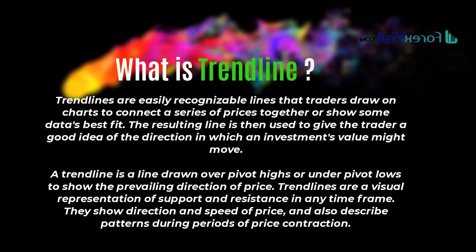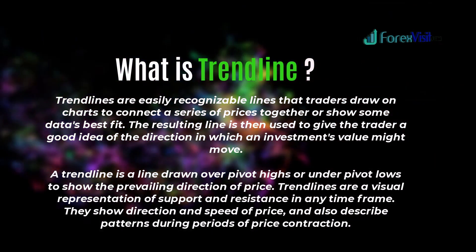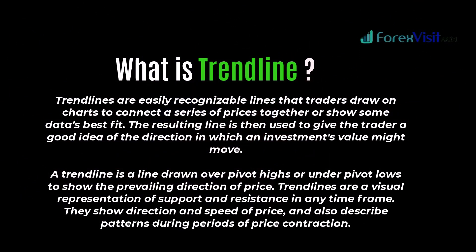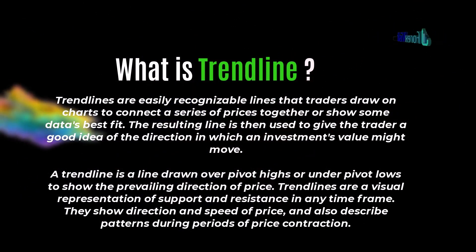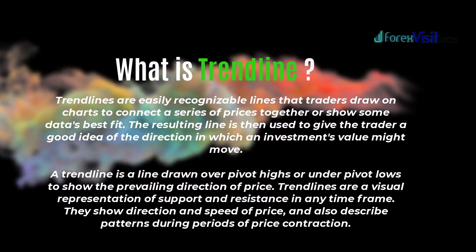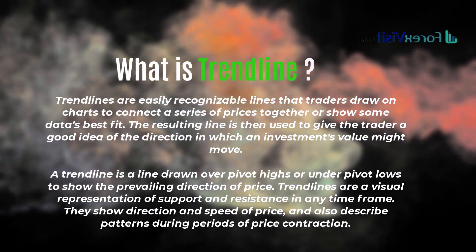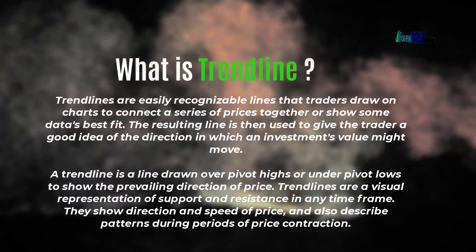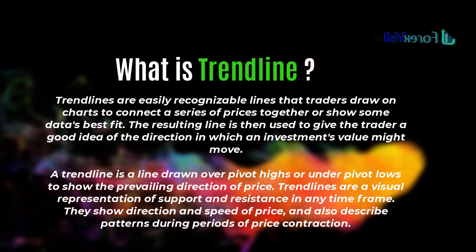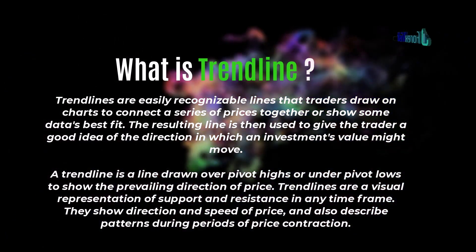A trend line is a line drawn over pivot highs or under pivot lows to show the prevailing direction of price. Trend lines are a visual representation of support and resistance in any time frame. They show direction and speed of price and also describe patterns during periods of price contraction.